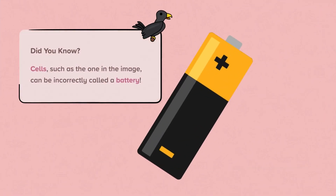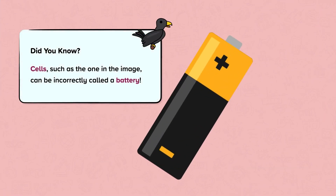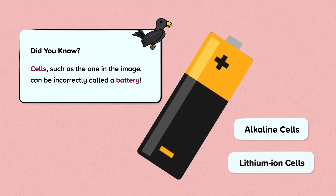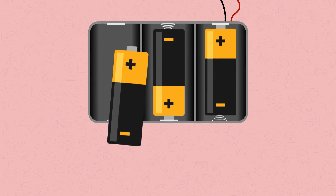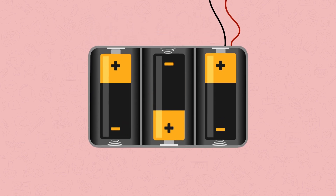Cells, such as the one in the image, can be incorrectly called a battery. There are different types of cells, such as alkaline cells and lithium-ion cells. The cell can be connected in series with other cells to create a battery. A battery is two or more cells connected in series.